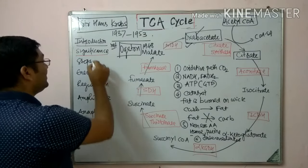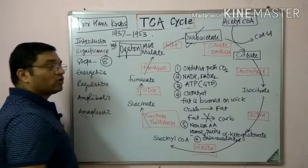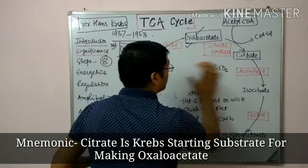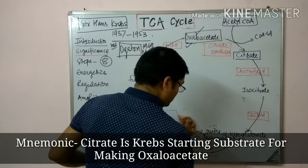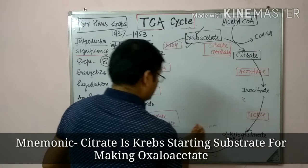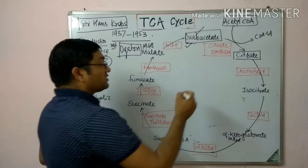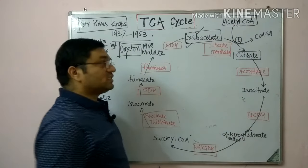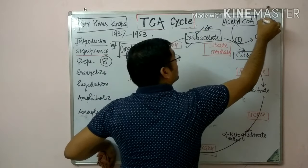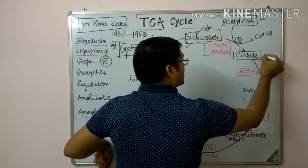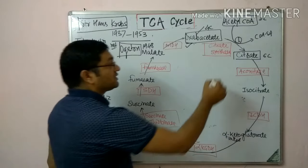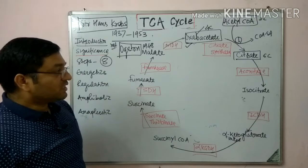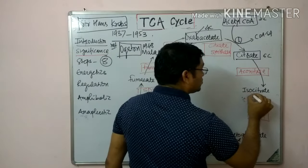The TCA cycle has eight important steps in the mitochondrial matrix, catalyzed by eight important enzymes. The first reaction: acetyl CoA condenses with oxaloacetate (a four-carbon compound) to give a six-carbon compound, citrate — a tricarboxylic acid — with the help of the enzyme citrate synthase. In the next reaction, citrate is isomerized into isocitrate.